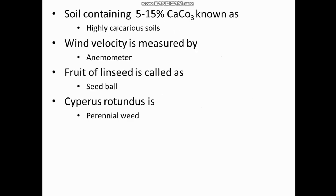Soil containing 5 to 15% CaCO3 is known as highly calcareous soils. Wind velocity is measured by anemometer. Fruit of linseed is called a seed ball. Cyperus rotundus is a perennial weed.